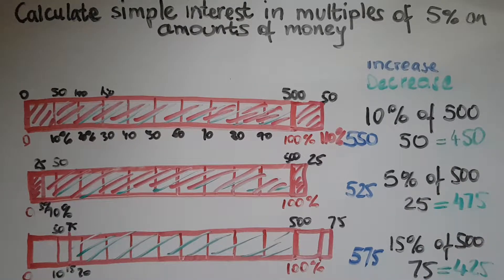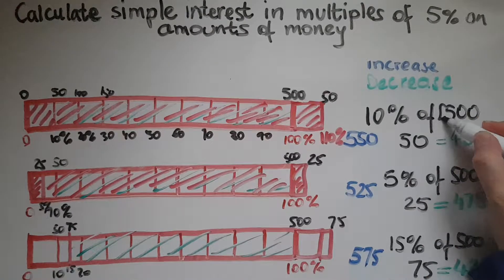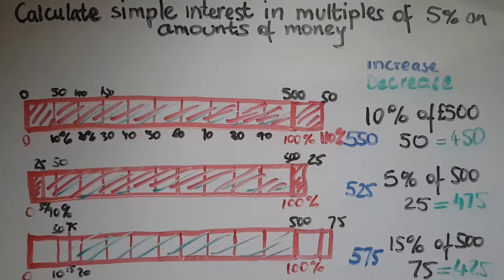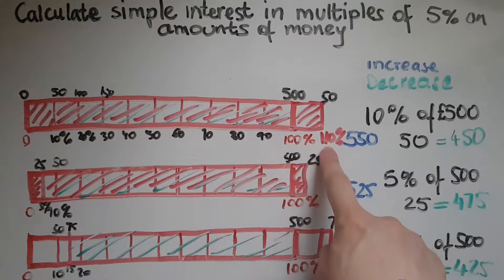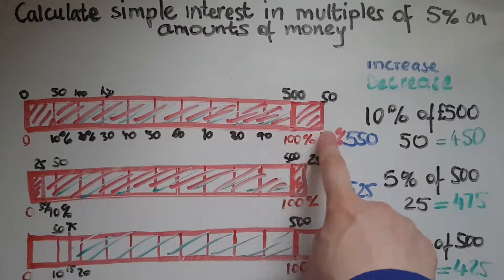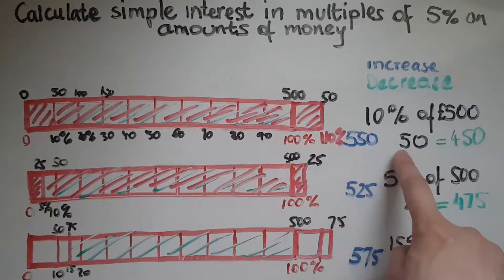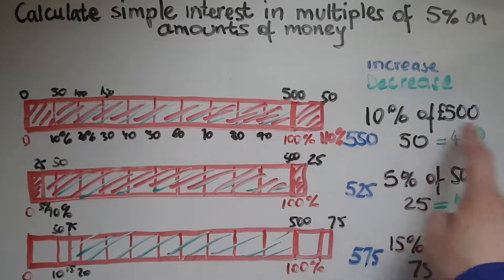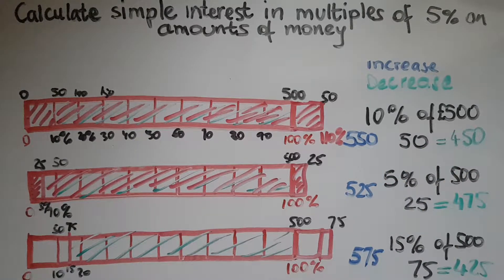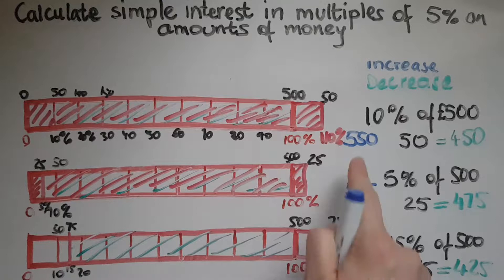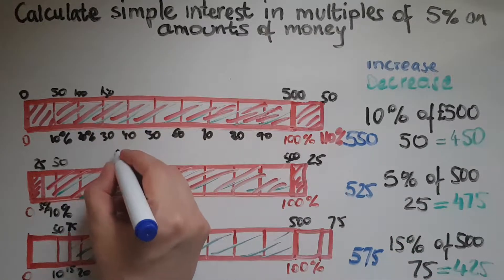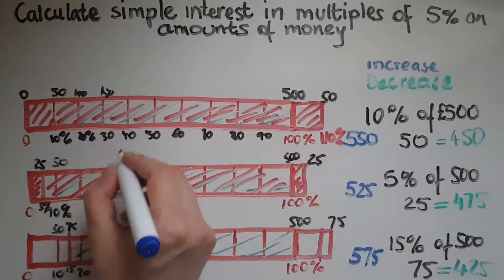If you invested £500, at the end of year one you'd be paid 10% extra. You'd have £550 because £50 is 10% of £500.